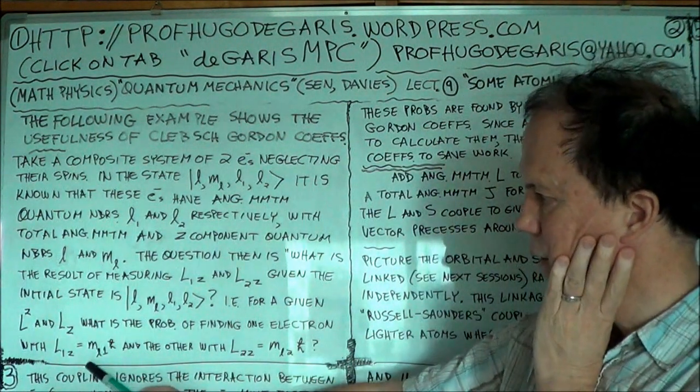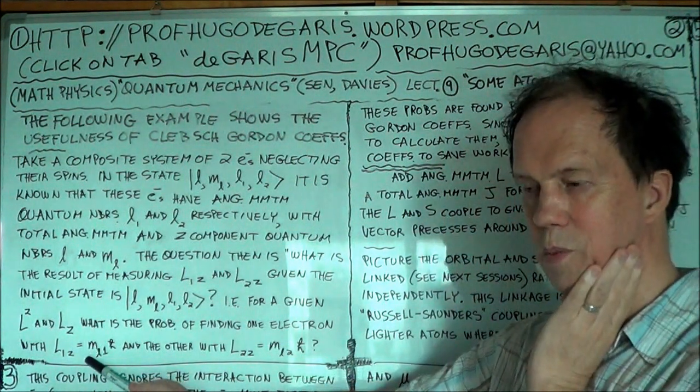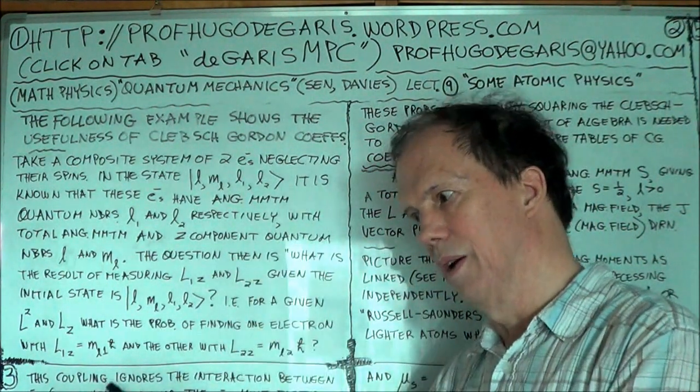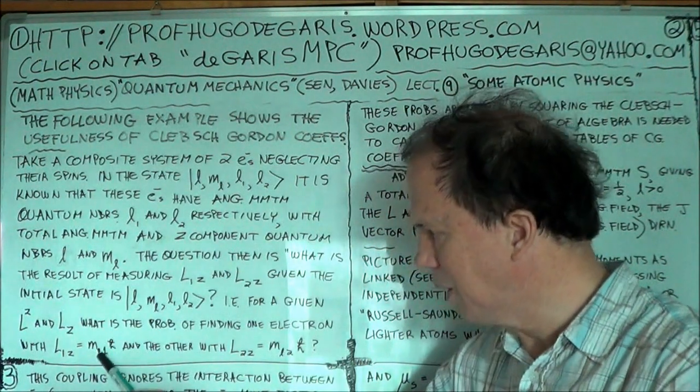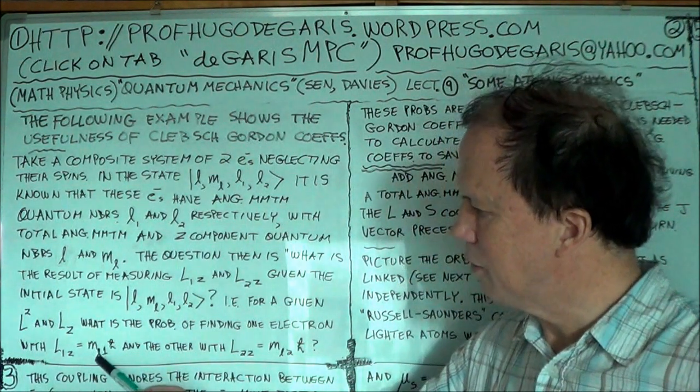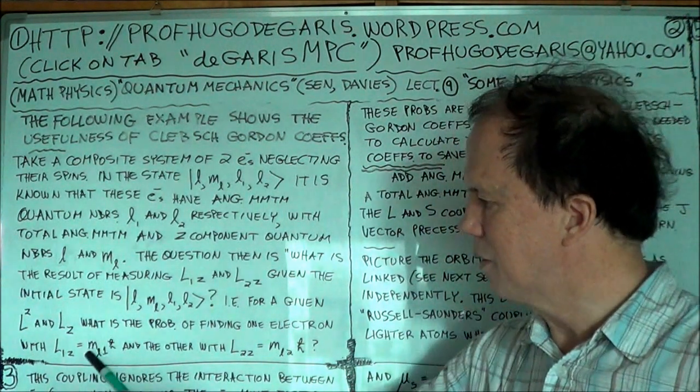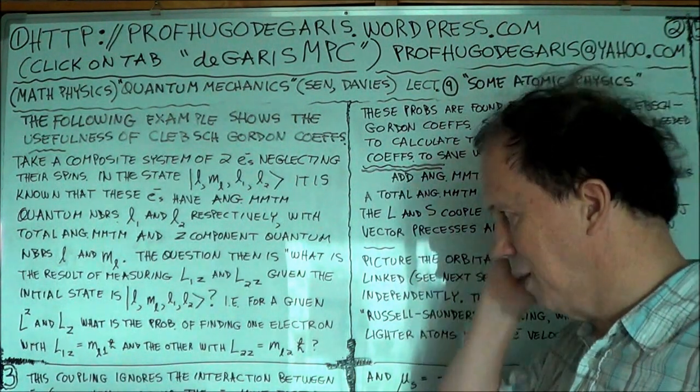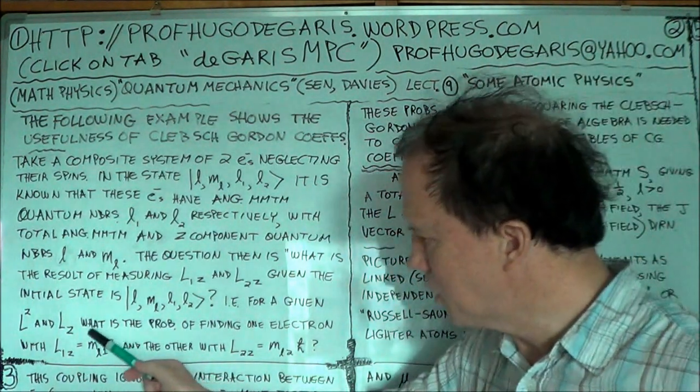To give you the answer to the probability of getting this result for electron one and this result for electron two, your particular value of m, you know, which component, what is that quantized discrete value of the orbital angular momentum of electron one along the z-axis, that's what ml1, and of course m will depend on the value of l, the angular momentum of your first electron, so m depends on l, so you put this little l down here to indicate that, and similarly for the second electron, okay, so to find the probability of measuring ml1.